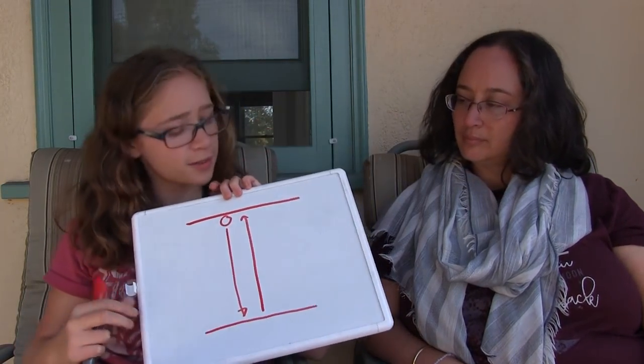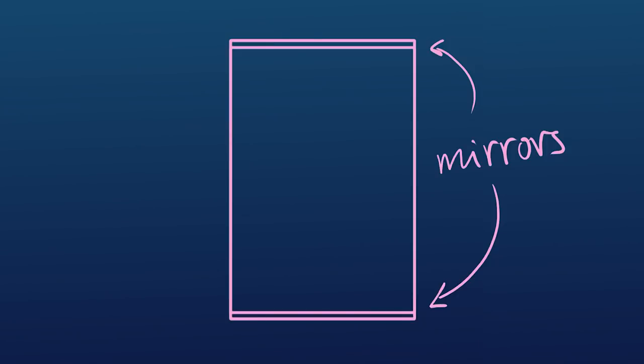I have a clock and here's how the clock works. I have two mirrors and there's a photon bouncing between the mirrors. It's a photon traveling at c and every time it hits one of the mirrors it goes tick tock tick tock tick tock.